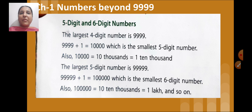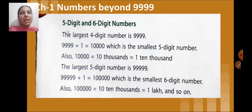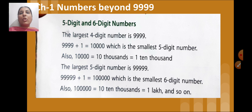In your previous classes you are acquainted with four-digit numbers. In this chapter we will start with five-digit and six-digit numbers. You know that the largest four-digit number is 9999, or simply you write four nines.